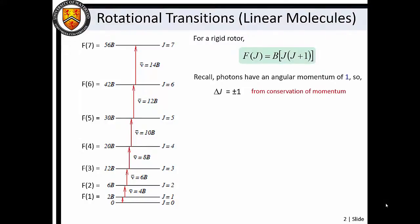Owing to the fact that photons carry one unit of angular momentum, rotational transitions obey a ΔJ = ±1 selection rule. Thus we find that rigid rotor transitions of νⱼ = 2B(J + 1) are allowed.